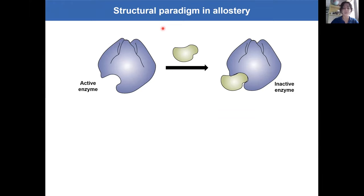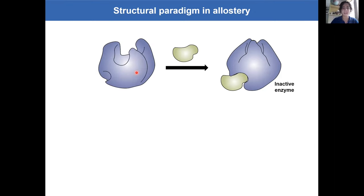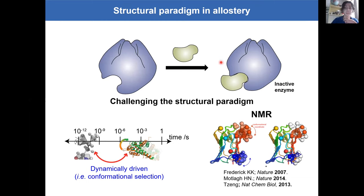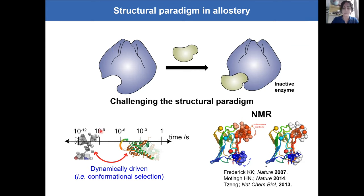The systems we work with are ones where structures do not necessarily reveal what is happening — the inducer binds but the crystal structure conformation doesn't change dramatically. One explanation is that the apo state samples two different conformations, and what the ligand does is freeze the protein in the closed conformation also captured in the crystal structure. One of the advantages of NMR is that we can measure intermediate timescale dynamics and see if proteins visit two different states.